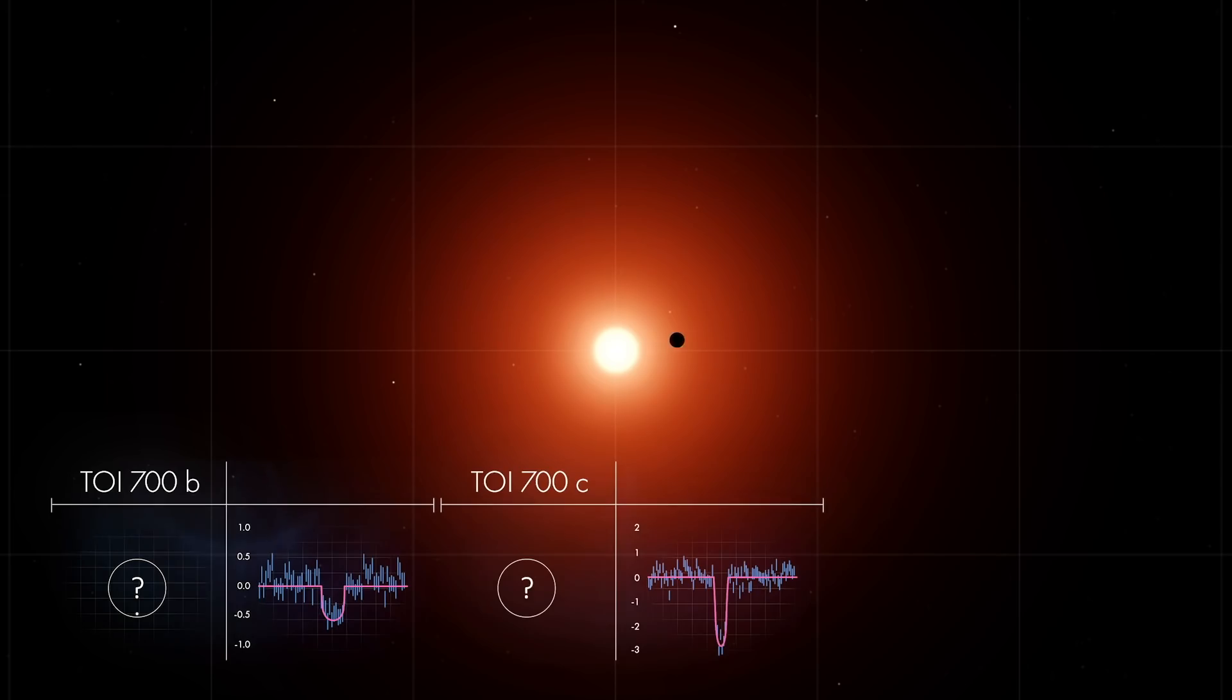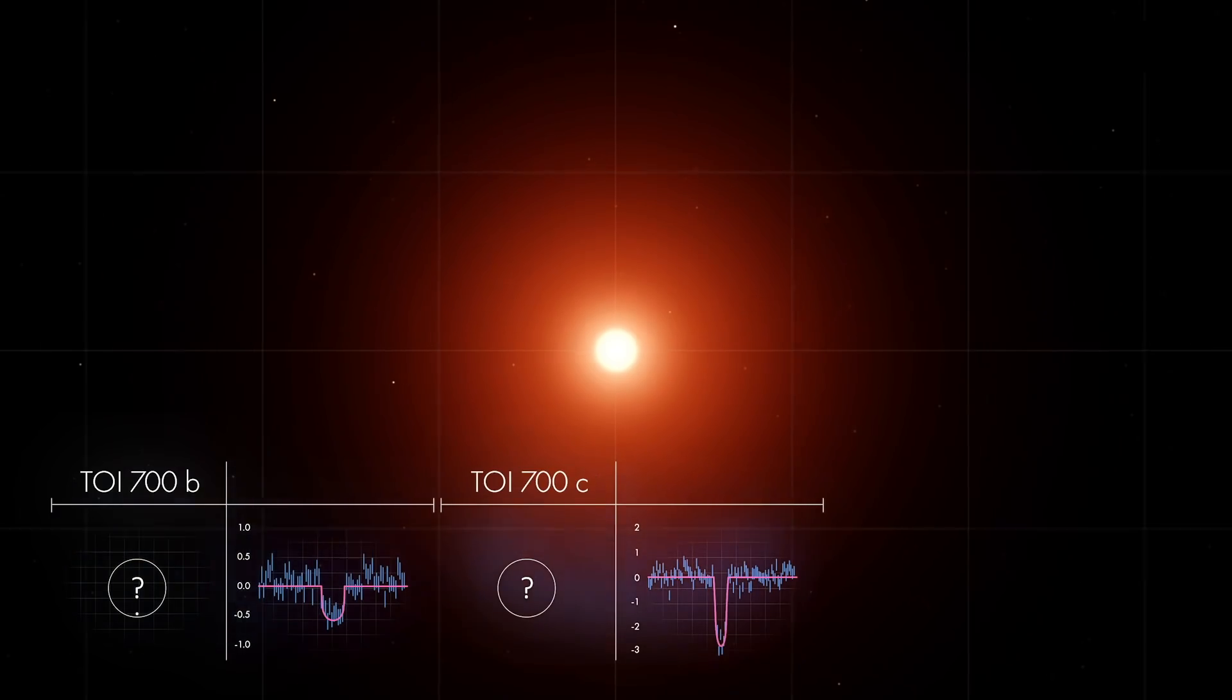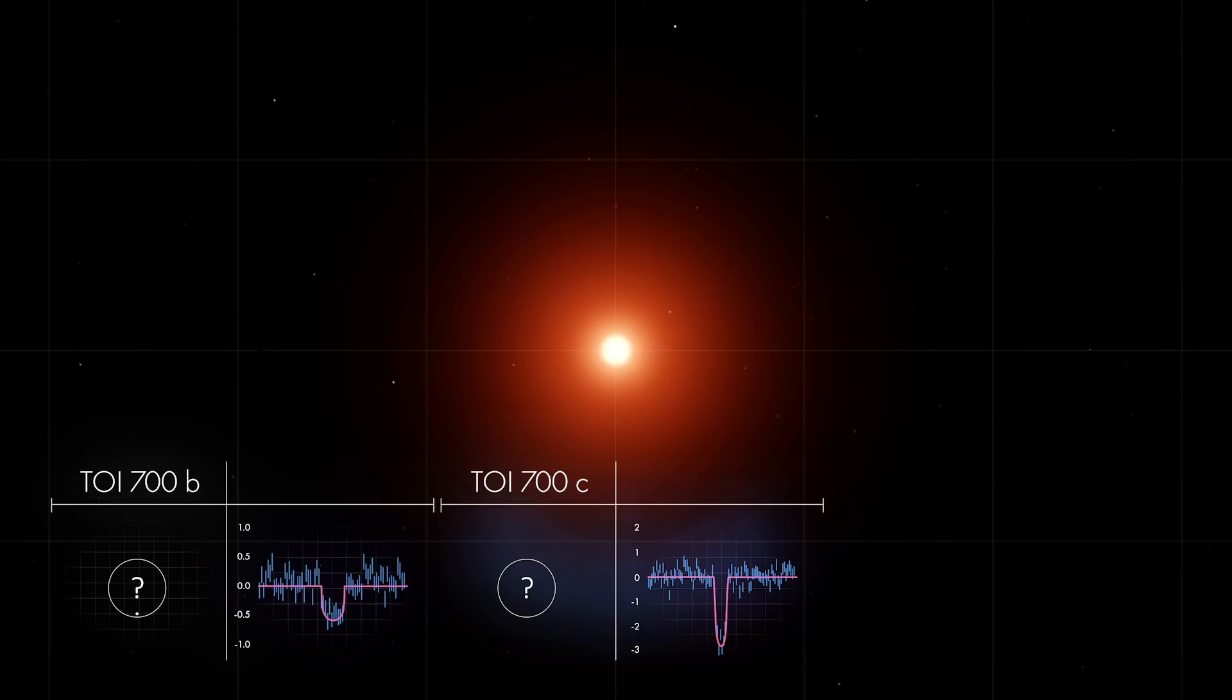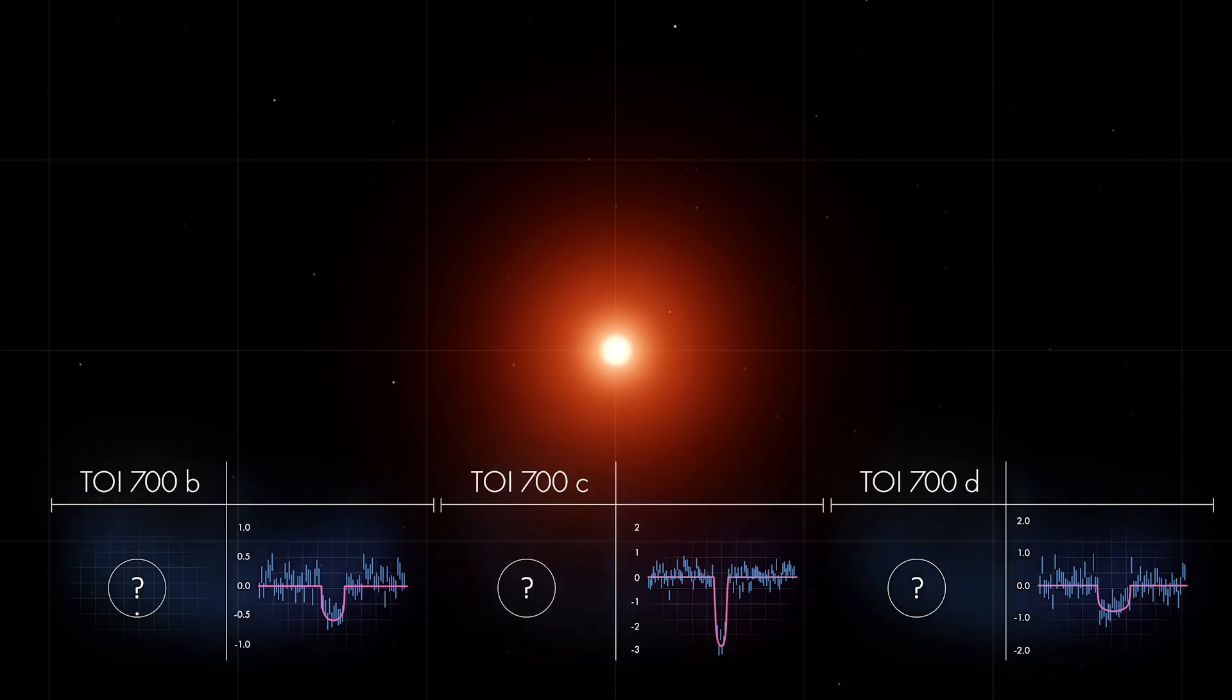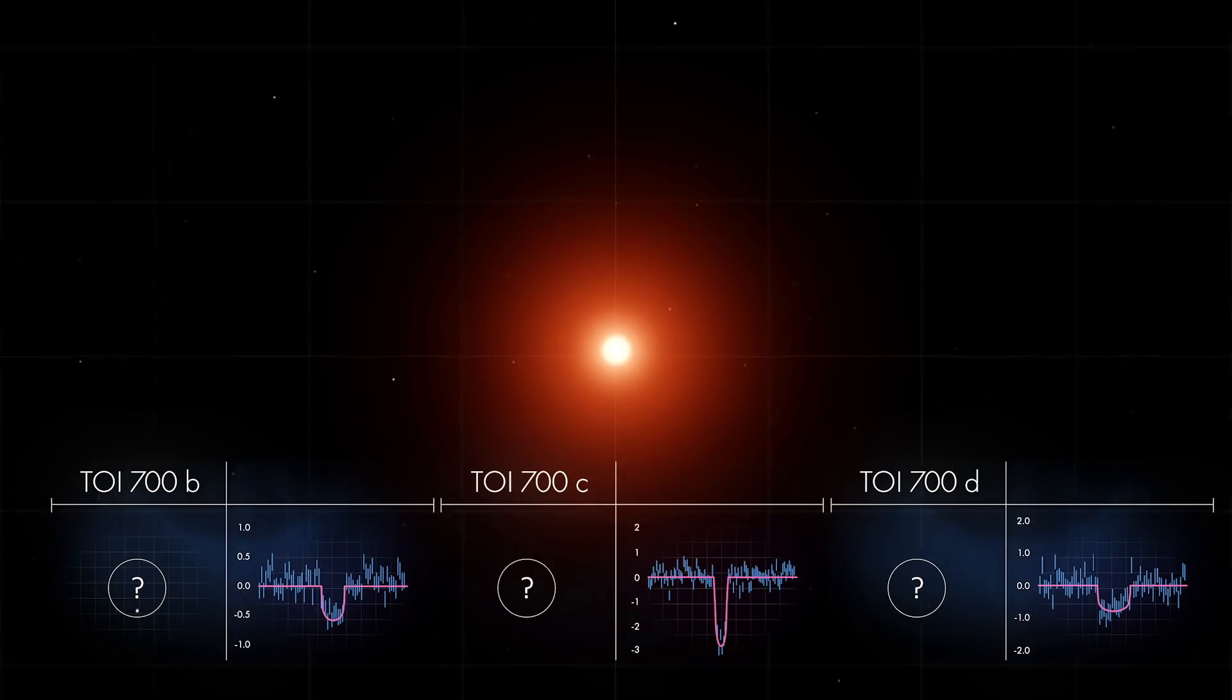The deeper, shorter transit means the planet is larger than the first, and the plane of its orbit is slightly tipped. A final set of transits showed TOI 700d orbiting even farther out. TESS observed this system for nearly 11 months and saw each planet transit multiple times.